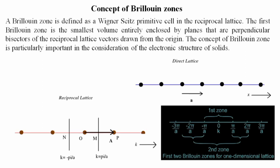In the direct space, the direct lattice is defined with spacing A, while in reciprocal lattice space, the reciprocal lattice vector K ranges from 0 to some point P (distance K). If we bisect this, the value of K goes from −π/A to +π/A. So the first Brillouin zone corresponds to K = ±π/A, meaning the zone width is 2π/A. The second Brillouin zone corresponds to K = ±2π/A, and so on.